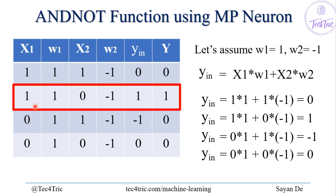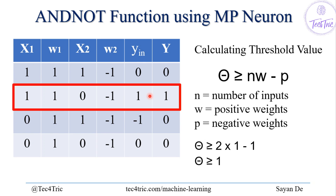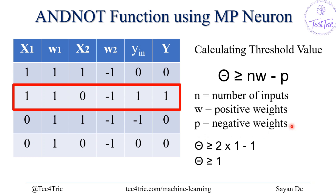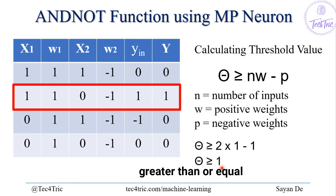The only neuron that fires is for input (1, 0). Now we have to calculate the threshold value. The threshold value theta should be greater than or equal to n times w minus p, where n is the number of inputs, w is the positive weights, and p is the negative weights. Here n=2, positive weight is 1, negative weight magnitude is 1, so theta >= 2*1 - 1 = 1.